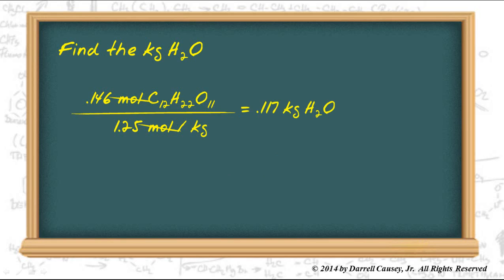We want to move the decimal place three times to the right, changing kilograms to grams, and we have 117 grams of water.